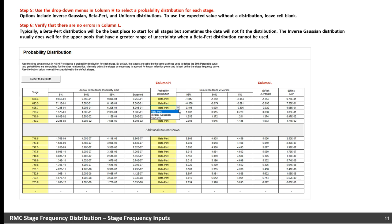Next, verify that there are no errors in column L. Typically, a beta PERT distribution will be the best place to start for all stages, but sometimes the data will not fit the distribution. The inverse Gaussian distribution usually does well for the upper pools that have a greater range of uncertainty when a beta PERT distribution cannot be used. Whatever distribution you use, the goal is for the distribution output to match the data provided by the H&H engineer as best as possible.